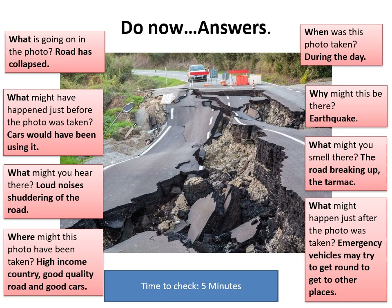What might have happened just before the photo was taken? Well, cars could have been using it — just a normal road. What might you hear there? Well, loud noises, shattering of the road as this was occurring. Where might this photo have been taken? Well, it looks like a fairly good quality road and a decent car, so could this be a high income country or a richer country?